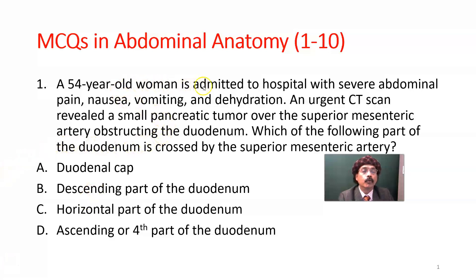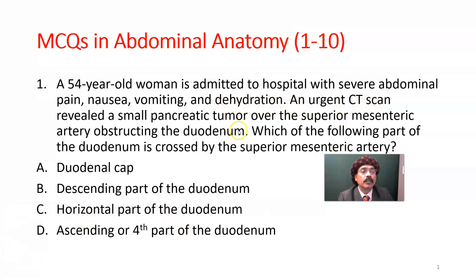Question number one: A 54-year-old woman was admitted to hospital with severe abdominal pain, nausea, vomiting, and dehydration. An urgent CT scan revealed a small pancreatic tumor over the superior mesenteric artery obstructing the duodenum. Which of the following parts of the duodenum is crossed by the superior mesenteric artery?